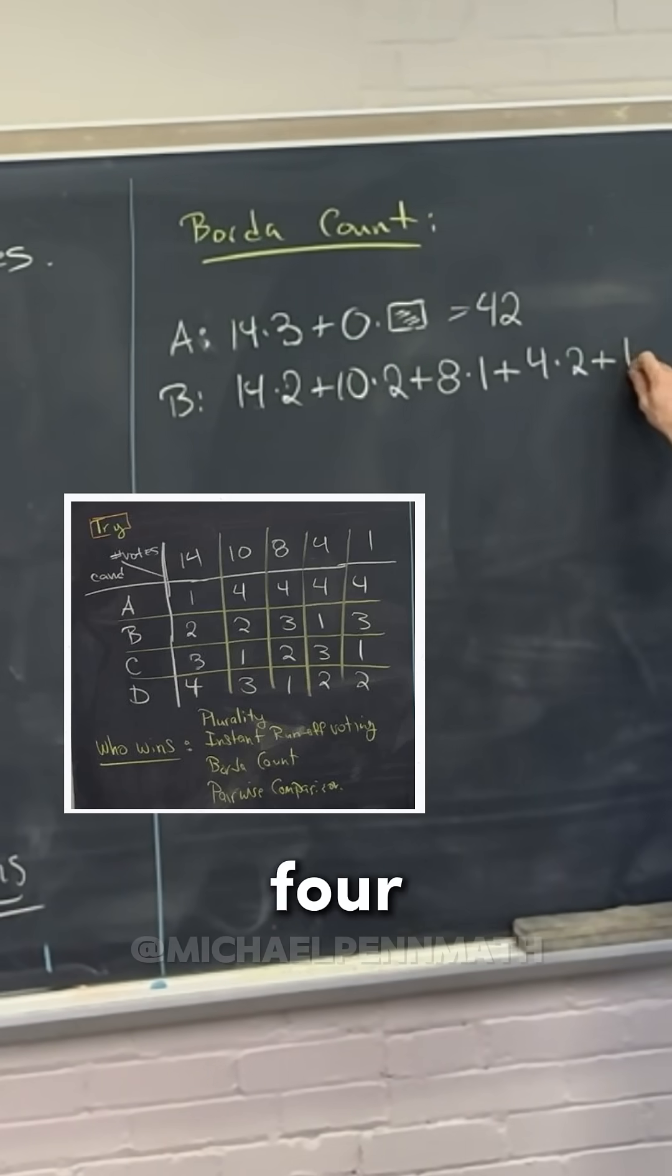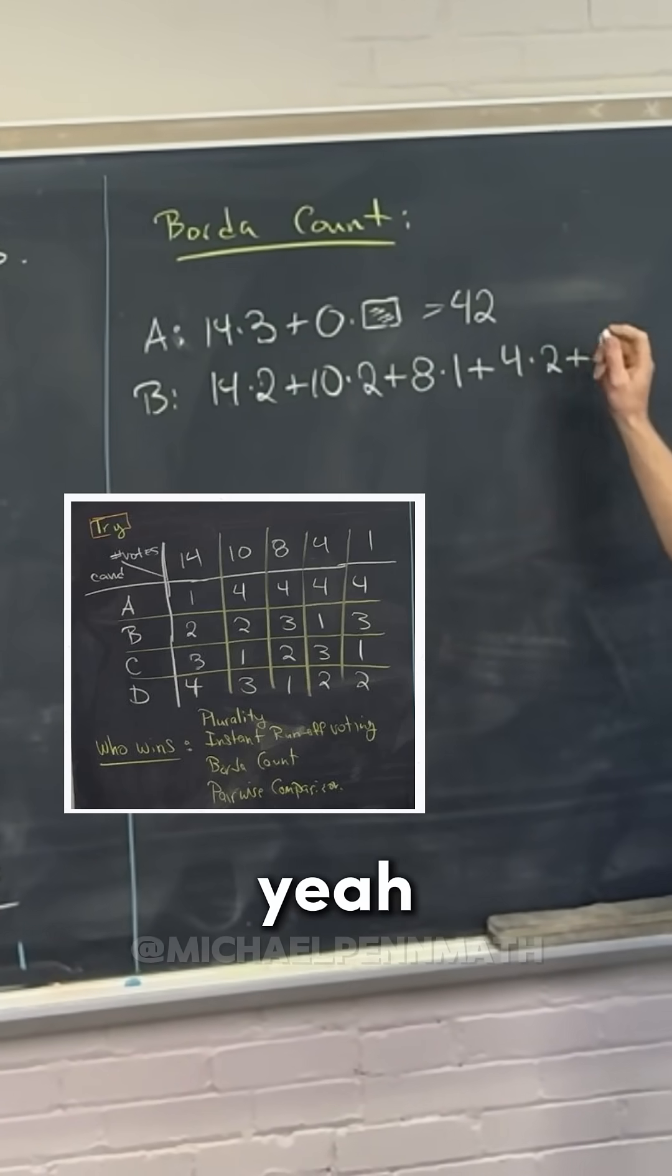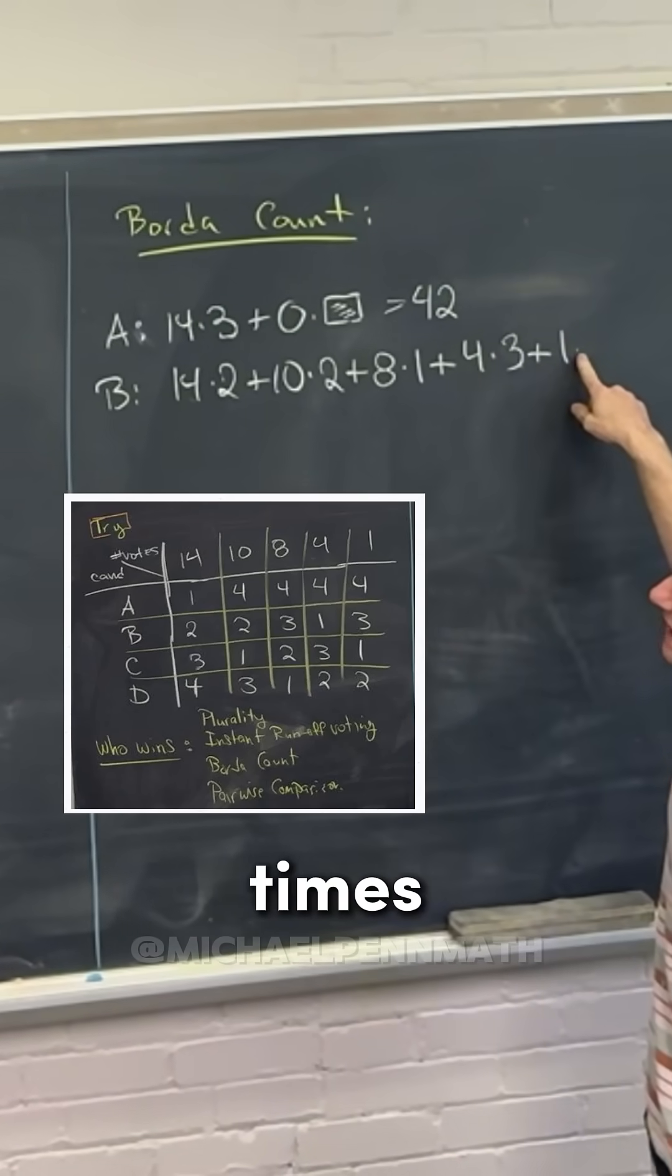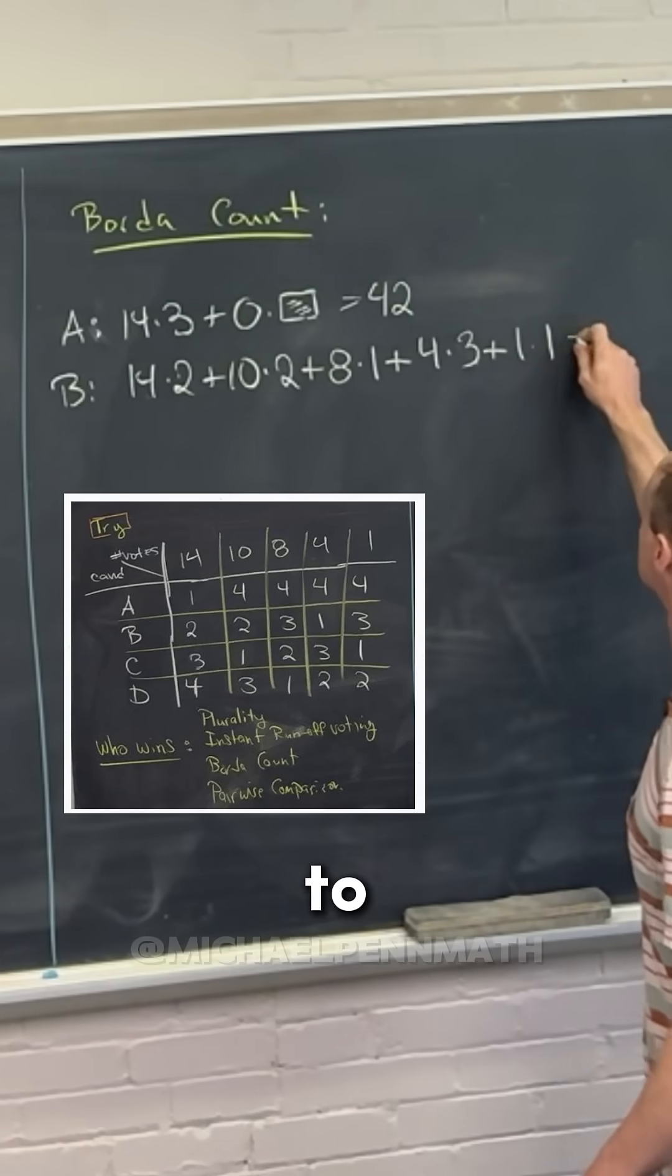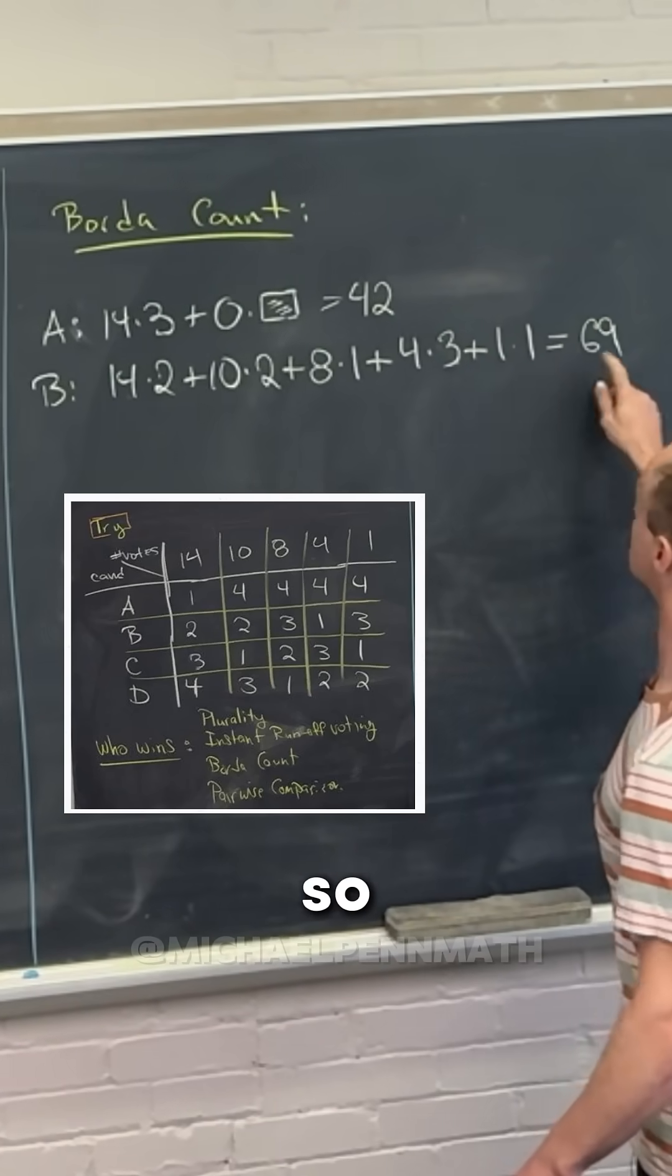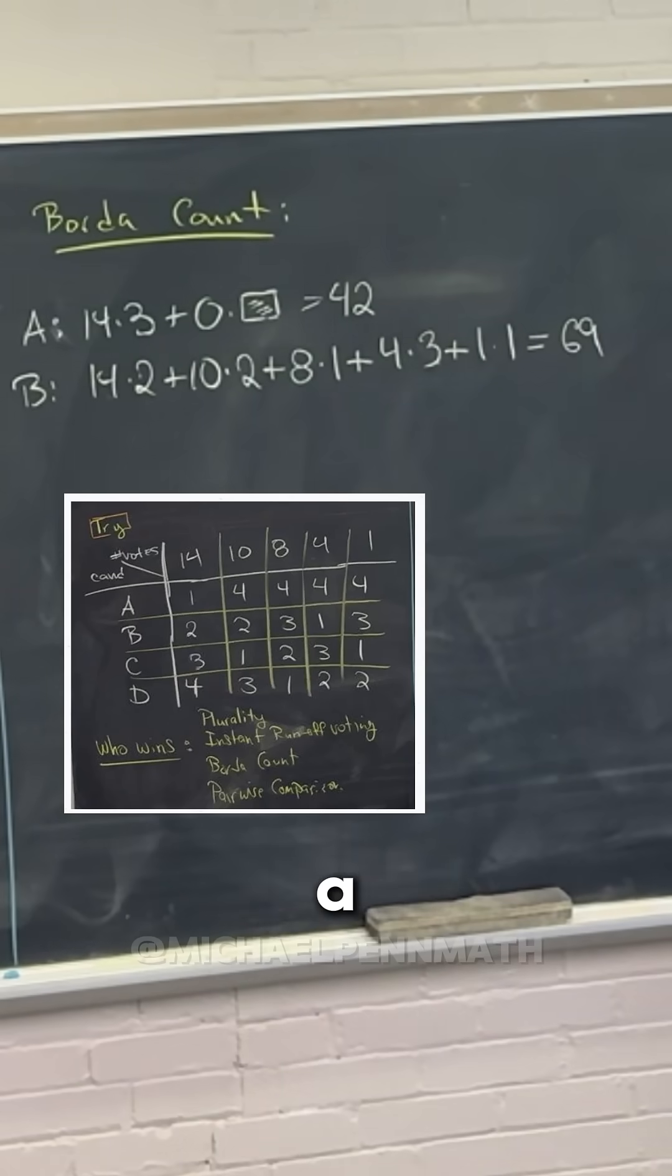And then four times three. Yeah, yeah, yeah. Thank you. Yep, four times three. And then one times one for the last column, right? And then what does that sum to? 69. 69. So check it out, B is already winning against A.